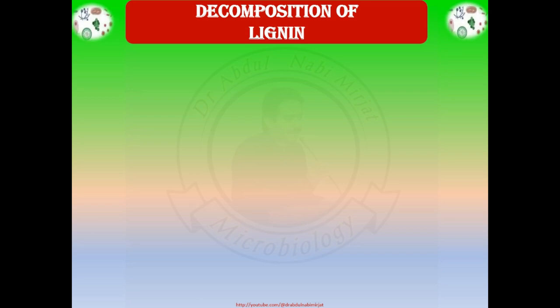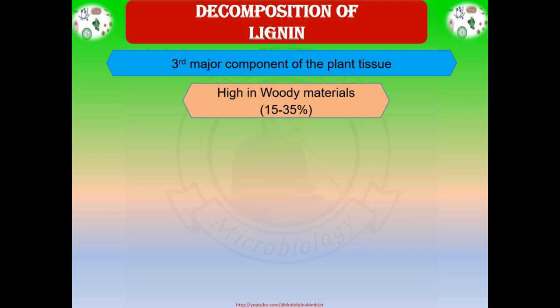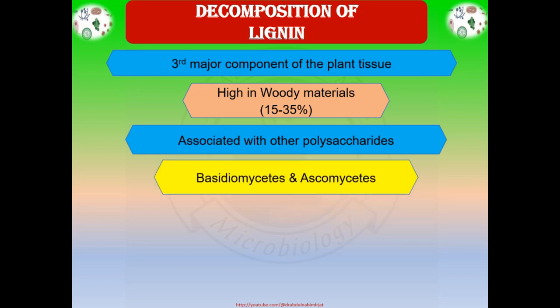Decomposition of lignin. Lignin is the third major component of plant tissue. The amount of lignin is high in woody material, approximately 15 to 35%. About 3 to 6% of lignin is found in secondary layers of the cell wall and in the middle lamella. Lignin is always associated with other polysaccharides and never occurs in the free state. The decomposition of lignin is carried out by members of higher fungi such as basidiomycetes and a few ascomycetes. The role of bacteria in lignin decomposition is not very clear, but bacteria may play a role after the participation of fungi.